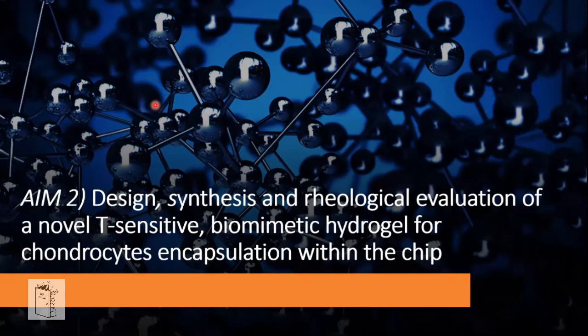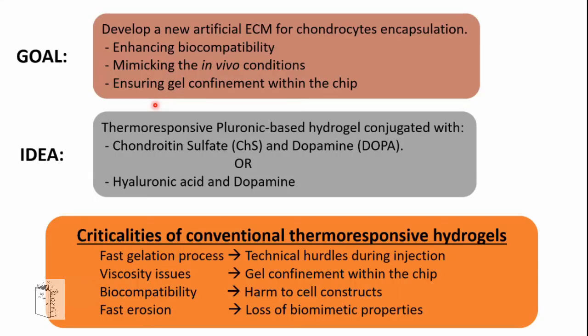We also explored the feasibility of designing and synthesizing a thermoresponsive hydrogel for chondrocyte encapsulation within the chip. The aim was to develop a new artificial extracellular matrix to encapsulate chondrocytes, enhancing biocompatibility, mimicking in vivo conditions, and ensuring gel confinement within the central channel. We exploited a pluronic-based thermoresponsive hydrogel, with two formulations: one with chondroitin sulfate and dopamine, and another with hyaluronic acid and dopamine.